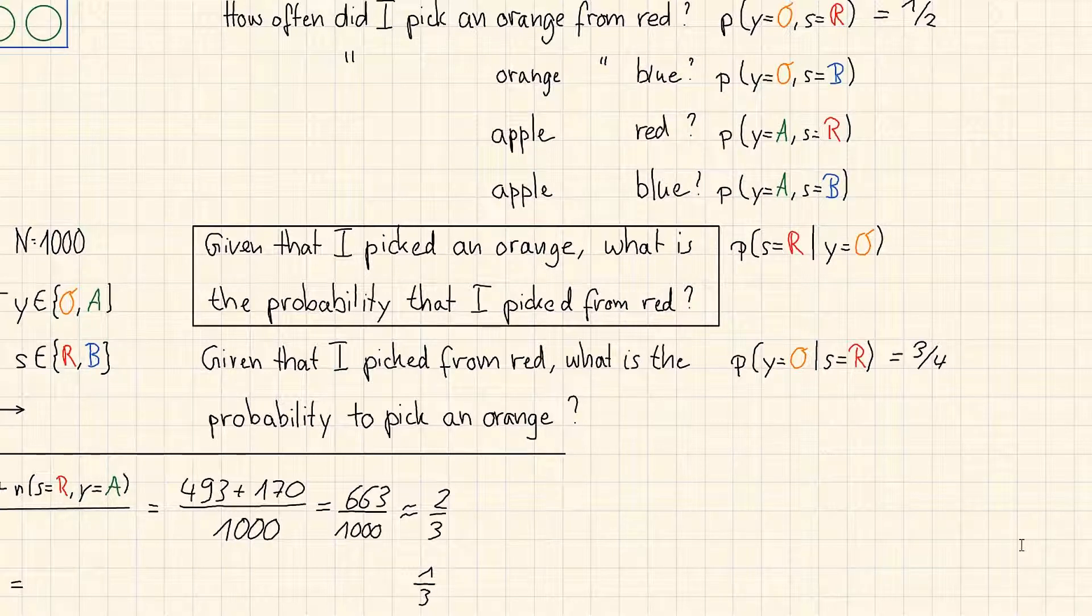We have conditional probabilities here. This very last one we wrote down. So this is the probability of picking an orange given that we pick from the red box. This is a conditional probability that is relatively easy to access.